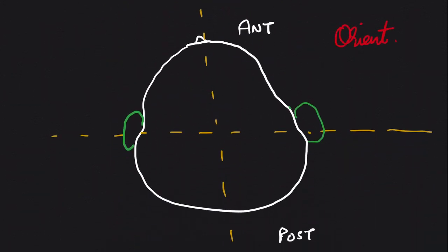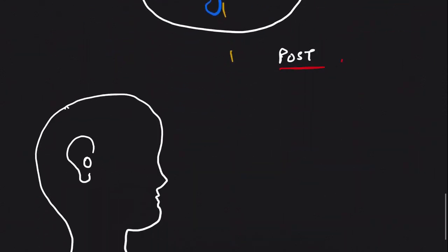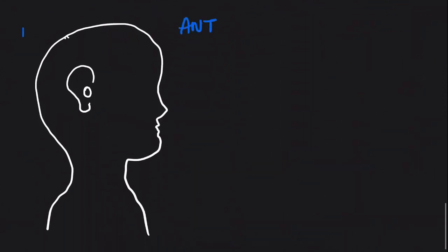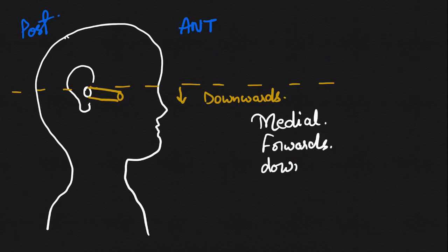Before we start, let me orient you on where the EAC and tympanic membrane are located in the body. It is directed from the external auditory meatus medially as well as anteriorly. From the side angle view, it is directed anteriorly and a little downwards. So overall it's directed medially, anteriorly, and downwards.